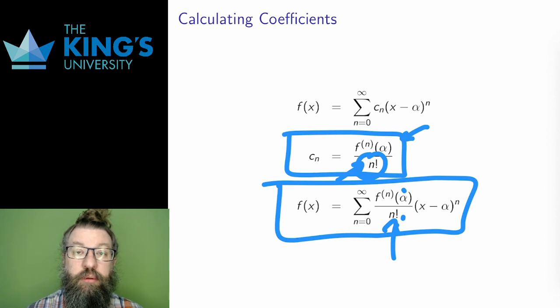This lets me write the general form. For any function that is infinitely differentiable at a point alpha, that function has a series centered at alpha with this form. The coefficients are the derivatives of the function evaluated at the center point, divided by factorials.